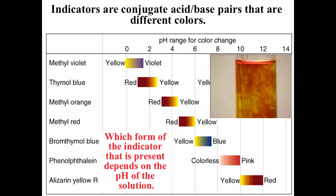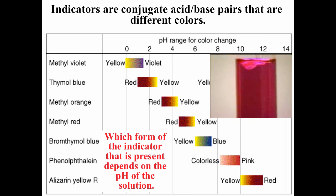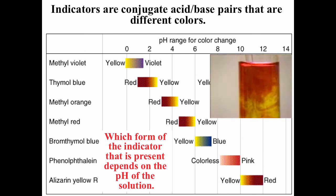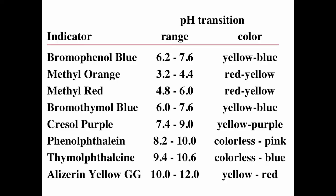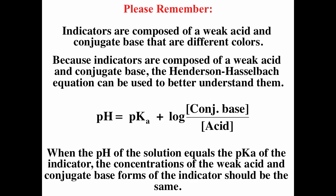Bromothymol blue is yellow in acidic solution and dark purple in basic solution. This color change is reversible with a change in pH — you can go back and forth between the two different forms just by changing the pH. There are many different indicators, all composed of weak acids and their conjugate bases, and they change color across a wide range of pHs depending on what kind of titration you are doing.